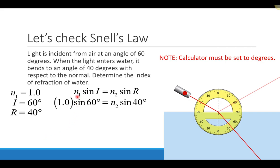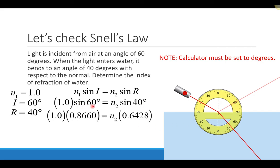Plugging into Snell's Law: the index of refraction in region 1, which is 1, times sine of the angle of incidence, which is 60 degrees, equals the index of refraction of region 2 times sine of 40 degrees. Sine of 60 degrees gives 0.8660, and sine of 40 degrees gives 0.6428. When solving problems, it's a good idea to keep quite a few digits in your answers — here I've kept four digits after the decimal.